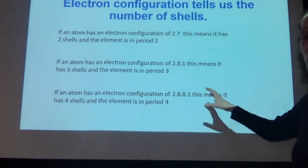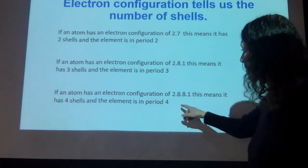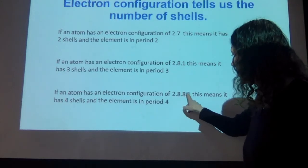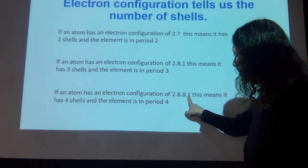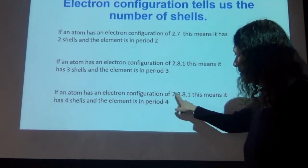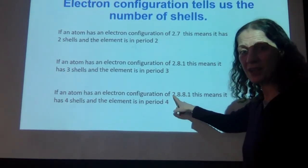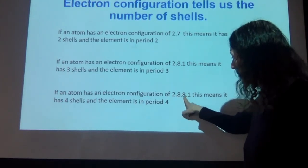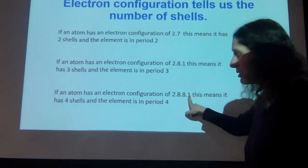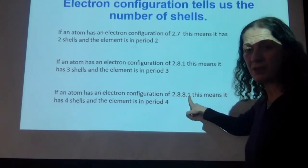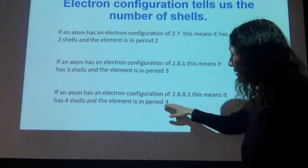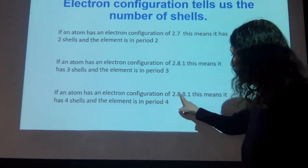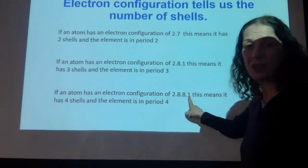The same logic applies for the last example. An element with configuration 2.8.8.1 has two electrons in the first shell, eight in the second, eight in the third, and one in the fourth — therefore it must be in period four because it has four shells.